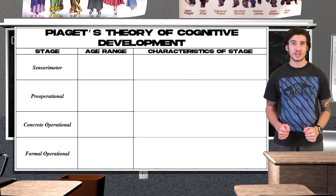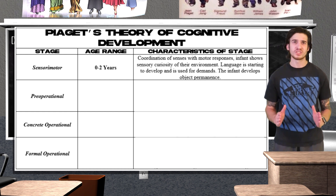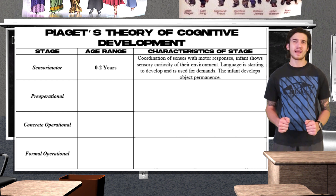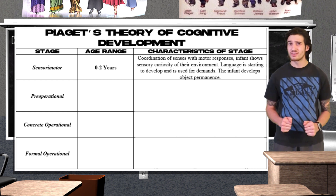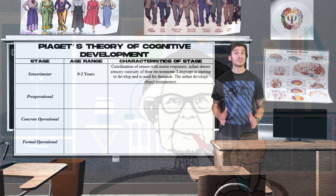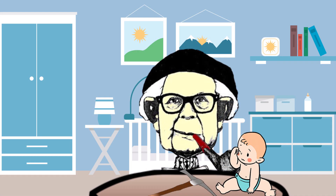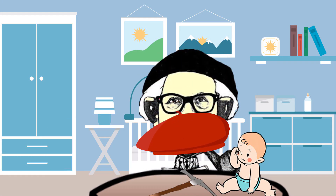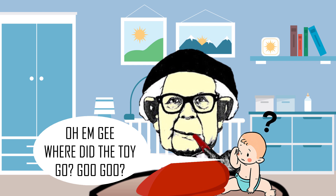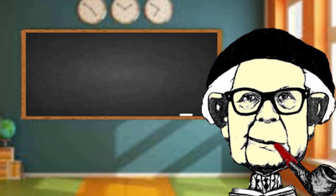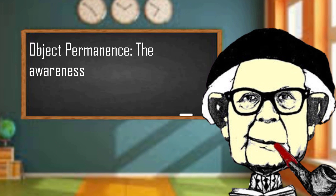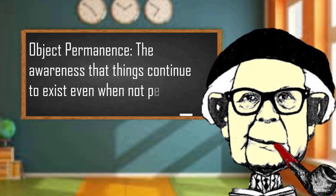Stage one is the sensorimotor stage, lasting from birth to nearly two years of age — babies experience the world through sensory and motor interactions. At the beginning of this stage, Piaget found that babies tend to live in the present, so if the child didn't see it, it doesn't exist. Piaget would present an infant with a toy, place his beret over it, and observe what the child would do. He found children younger than six months would not search for the toy, because young infants lack what is known as object permanence — the awareness that things continue to exist even when we are no longer perceiving them.